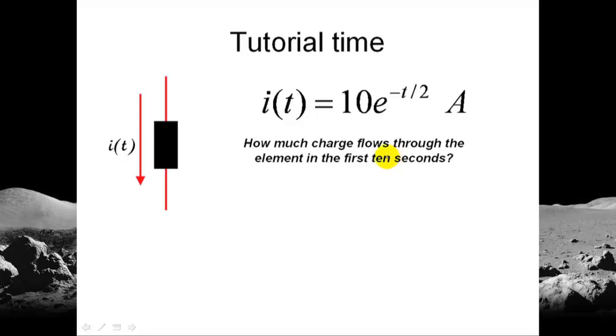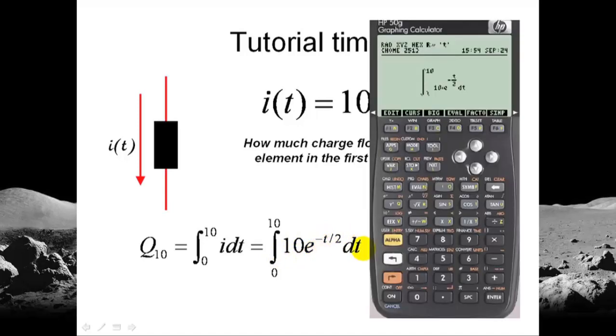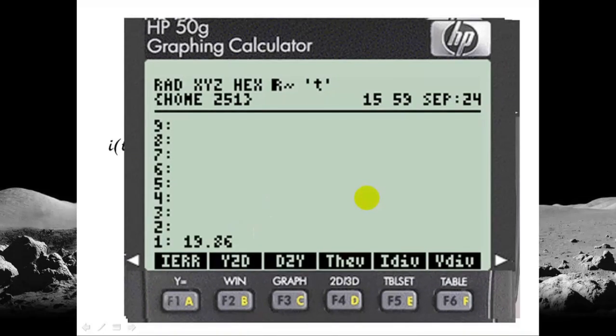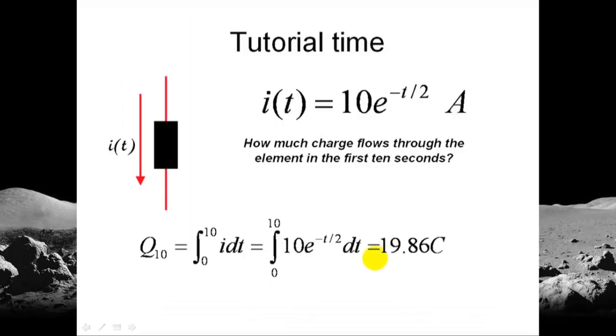In other words, we integrate that expression from 0 to 10. Integral of the current from 0 to 10, and that is the integral of 10 exponential negative t over 2. In the calculator... oh, that's too small. Let's zoom in. In the calculator, we enter the integral of 10 exponential negative t over 2. Enter. Evaluate. 19.86. That is the charge. The charge is 19.86 coulombs. In the first 10 seconds, this current passed through that element 19.86 coulombs.